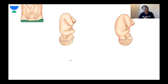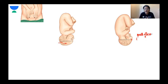On PV examination, you will see a sagittal suture obliquely placed and the posterior fontanelle directed posteriorly towards the sacroiliac joint — that confirms right occipito-posterior position. If the triangular fontanelle were on the right side transversely, it would be right occipito-transverse. Other significant PV findings in ROP include an elongated bag of membranes and a loose hanging cervix.